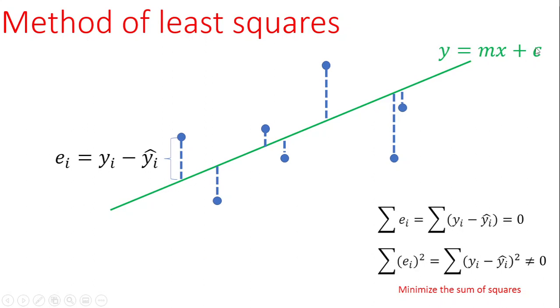If you have ever wondered how the software determines the values of the slope m and the intercept c, it's through a process called the method of least squares. When you fit a line, you have a predicted value for any x value. You have a predicted y value and the actual y value. The difference between the predicted and the actual y value is called an error, or it's also called a residual.